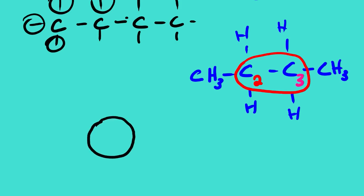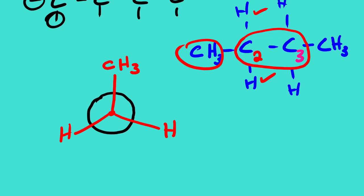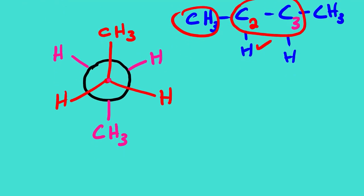Now here is how we draw the Newman projection. The front carbon has a methyl group and is bonded with two hydrogen atoms. Just behind this carbon we also have carbon number three, which is also bonded with a methyl group and two hydrogen atoms. This is one way to draw the Newman projection of butane. We can actually draw four different types of Newman projections - these four different types of diagrams we also call conformations. Two of them are under staggered conformation and the remaining two are under eclipsed conformation.